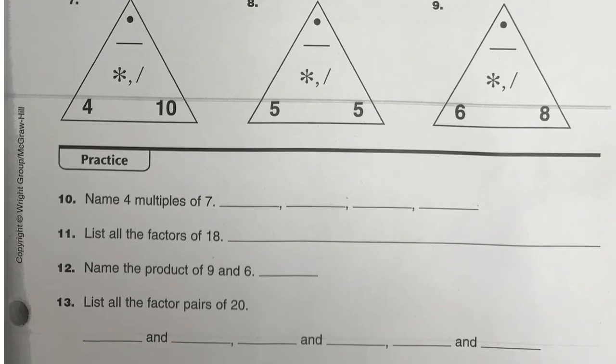And then the bottom part here, multiples of 7. So anytime you have 7 as a factor, any product. So for example, 49 would be one, 70 would be another one. 7 times whatever equals, those are your multiples.